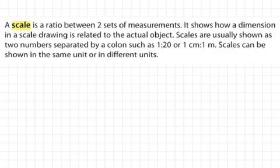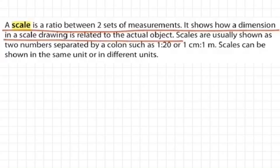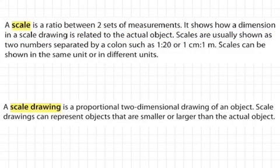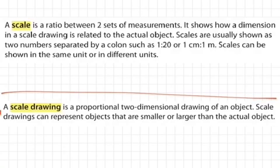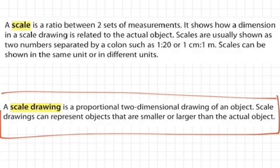A scale is a ratio between two sets of measurements. It shows how a dimension in a scale drawing is related to actual objects. The real important part is those first two sentences. A scale drawing is a proportional two-dimensional drawing of an object. Scale drawings can represent objects that are smaller or larger than actual objects. The scale, when it was 4 inches represented the 3 feet, that kind of gave us the scale of what we had in that blueprint or that drawing.